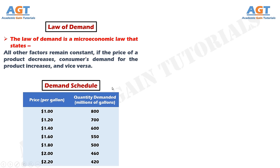This is a demand schedule. This table shows the price for each gallon of gasoline, and the change of demand with change of price of each gallon. According to the law of demand, as the price increases, the demand for gasoline falls, and as the price decreases, the demand for gasoline increases.